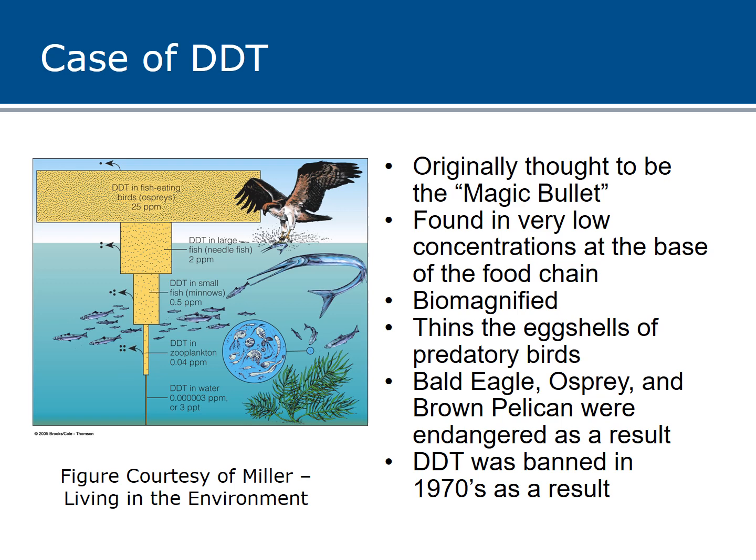But DDT gets biomagnified as you go higher up the food chain. It has the specific effect of thinning the eggshells of predatory birds. Osprey and other organisms at the top of the food chain had their reproduction cut to near zero because their eggs were so thin that they'd sit on the egg and crush it. The bald eagle, osprey, and brown pelican became endangered as a result. When your national symbol goes on the endangered species list, you know there's a problem. DDT was banned in the 1970s for domestic purchase, though U.S. companies could still manufacture and sell it overseas. Since the ban, concentrations have decreased and populations of bald eagles, osprey, and brown pelicans have increased greatly.